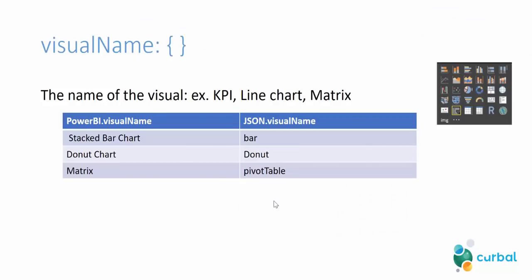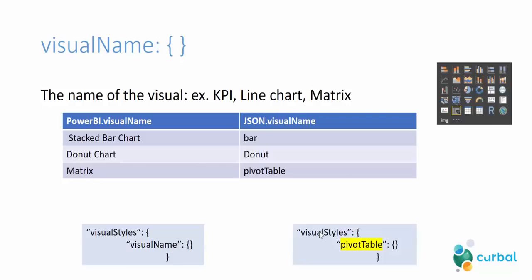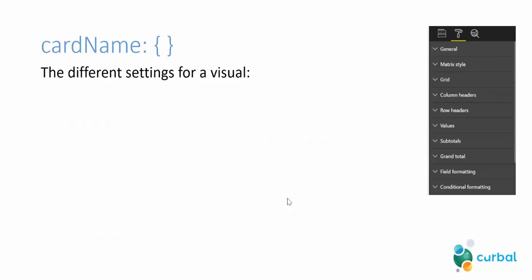So once you have that — remembering the structure — first we write visualStyles which we don't change, and then we change visualName with the name of the visual. If we have a matrix, we change that to pivotTable. So our code would look like: visualStyles, then pivotTable. The next thing you need is the cardName.